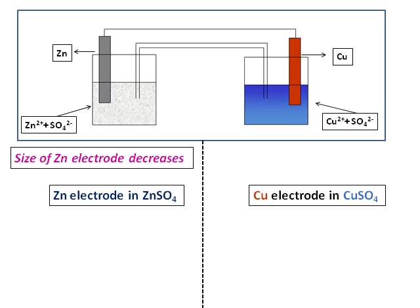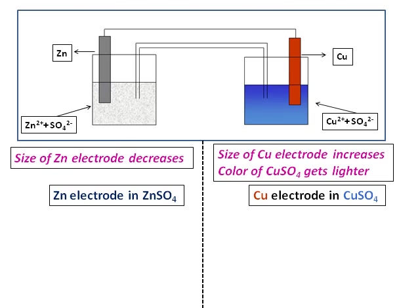Number one, the size of zinc electrode decreases. Number two, size of copper electrode increases. And we also find the color of copper sulfate solution gets lighter.